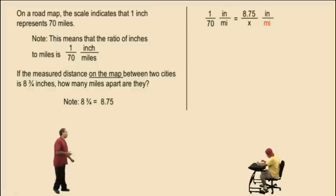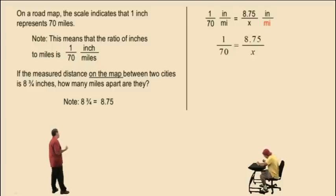The reason we did it this way is because on the left hand side of our proportion, we had inches on top and miles in the denominator. And remember, if you put inches on the top and miles in the denominator on the left hand side, you must have the same units arranged in the same way on the right hand side. Therefore, you need inches on top, miles on the bottom. And since we're looking for miles, x shows up in the bottom of our proportion on the right hand side. So here's our proportion. 1 over 70 equals 8.75 over x. And now we can cross multiply.